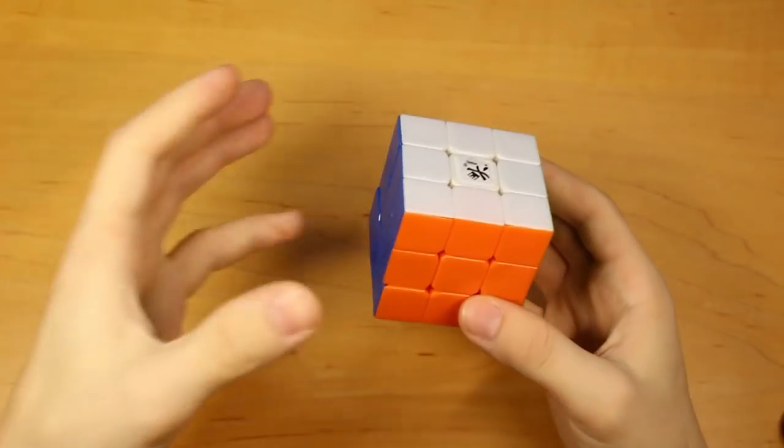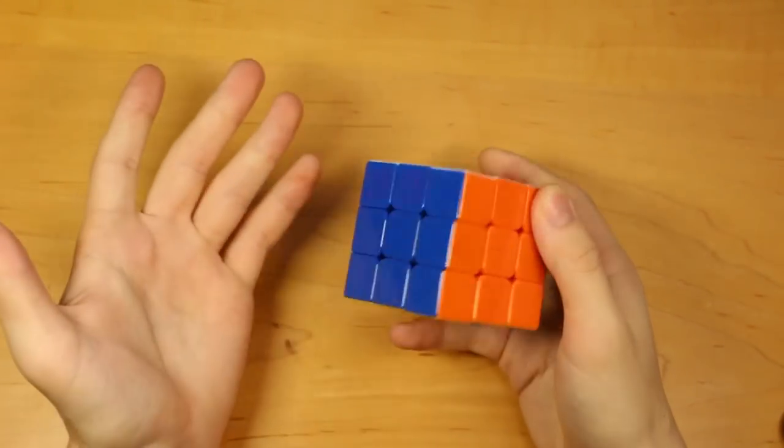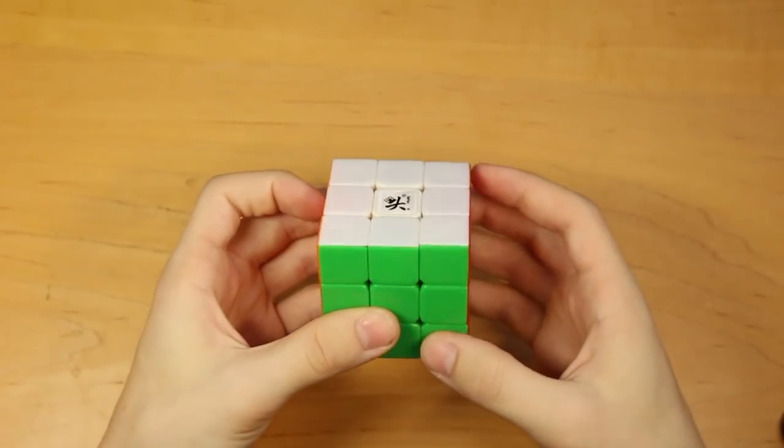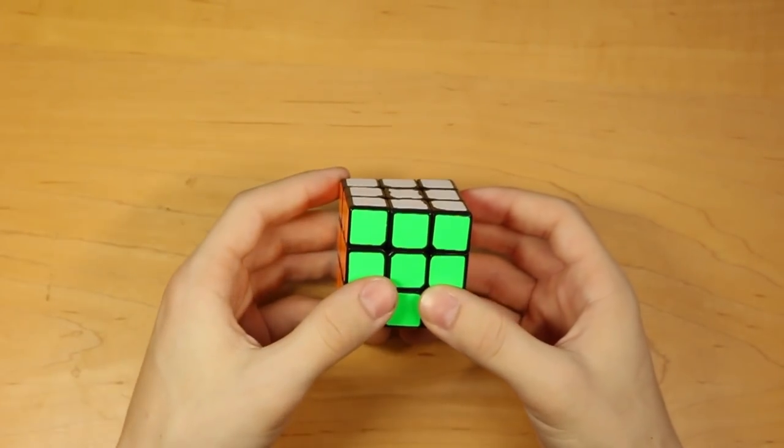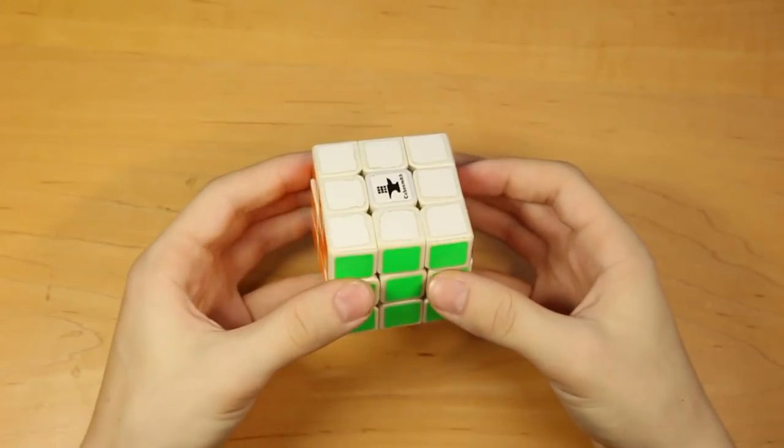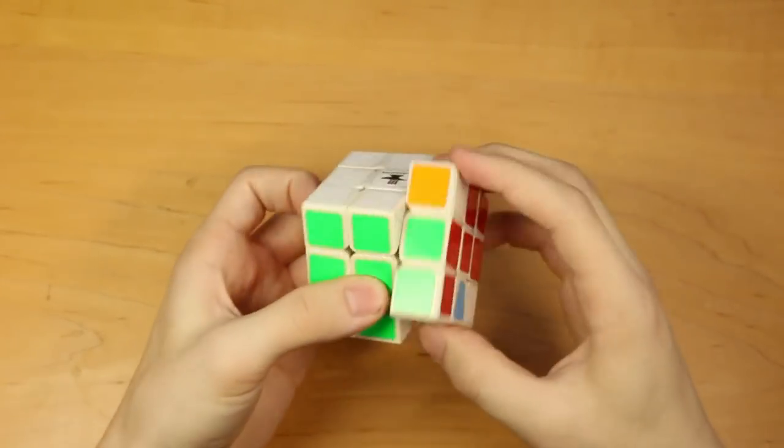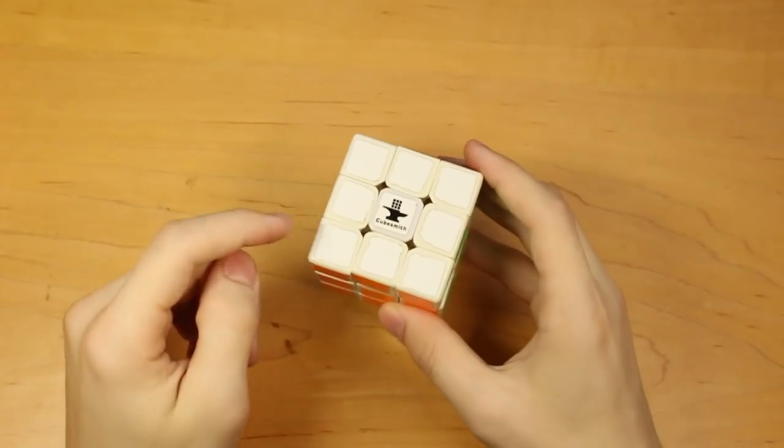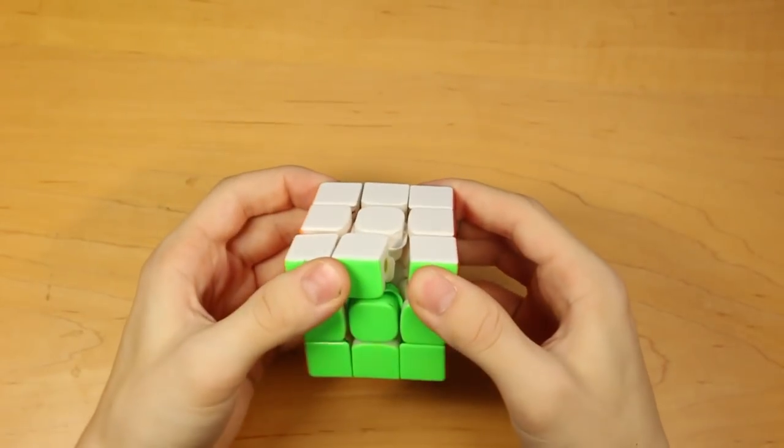Now for my Dayan cubes. This is my first speed cube ever. I think it was advertised as a Zhanchi. But I think it's actually a Guhong. It doesn't turn that well. But I think it's still functional. A mini Zhanchi that was part of I think my very first Cubicle order back in 2014. A full size Zhanchi, which I don't really remember how I got it. But I do have the famous Cubesmith logo, which is getting increasingly rare. And the Tengyun, which is a really quiet cube. But a little stiff.